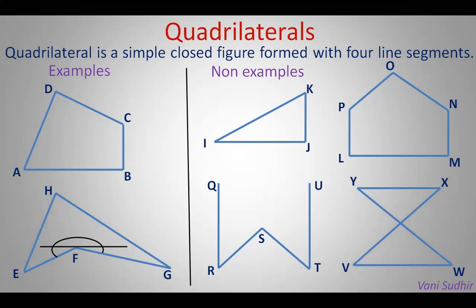Why is another figure not a quadrilateral? The sides VX and WY are crossing each other. So it is not a quadrilateral — in a quadrilateral, only 4 end vertices are joined.